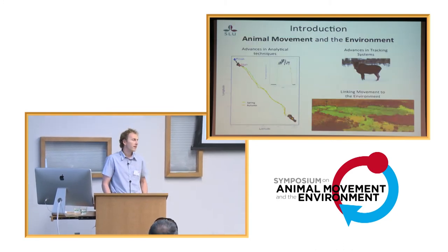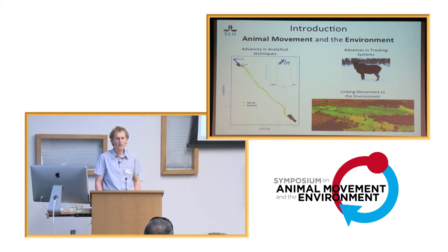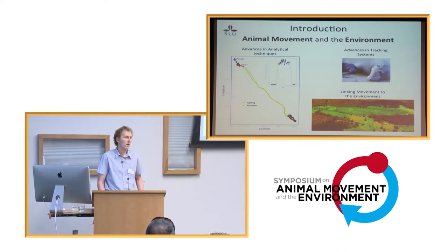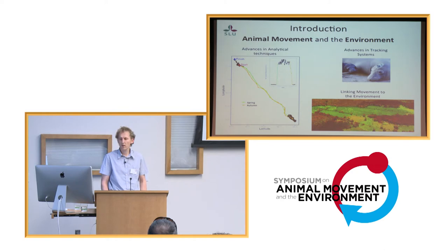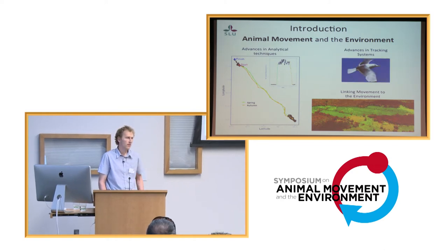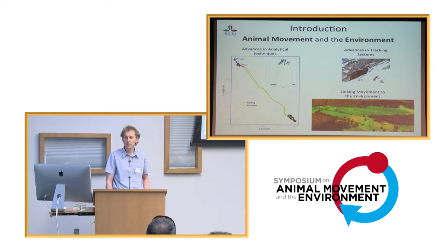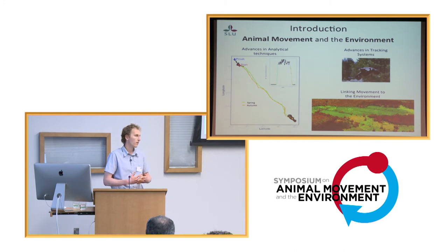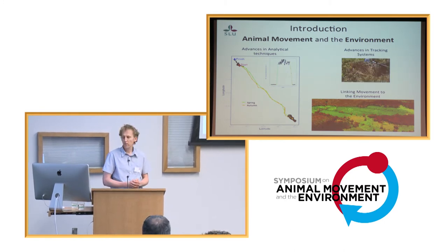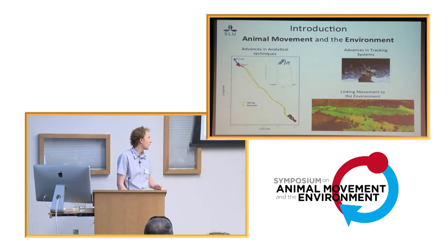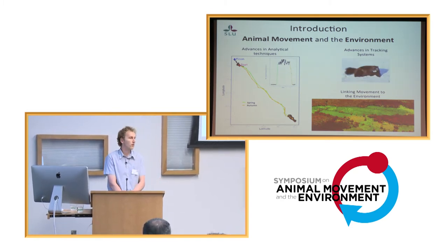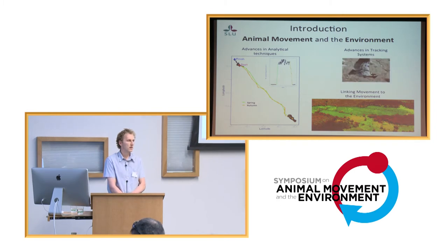The title of the symposium was a pretty good introduction to my talk. Animal movement and the environment is a core component of movement ecology and we've seen huge advances in movement ecology recently — advances in tracking systems allowing us to track an ever increasing number of species, and also advances in the ways that we can analyze movement data and relate this to the environment. For example, this image here shows laser scanning we do at our university, giving us not only the landscape structure but also the forest structure and canopy height.